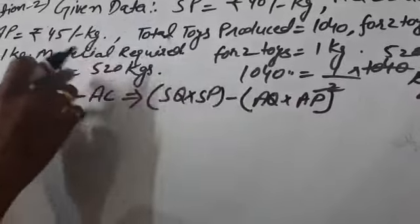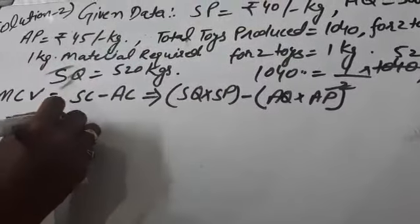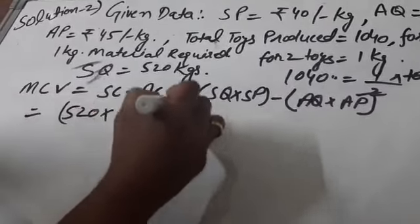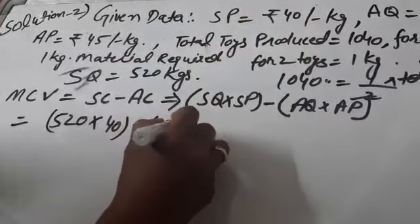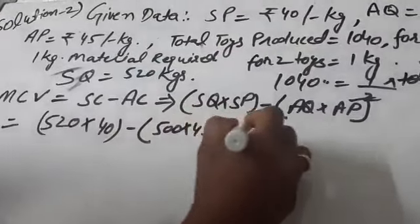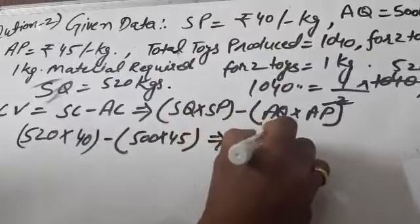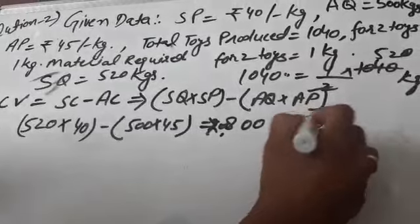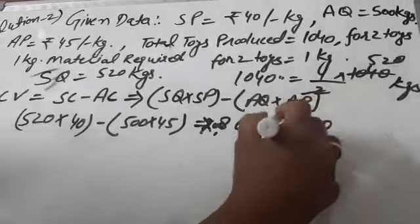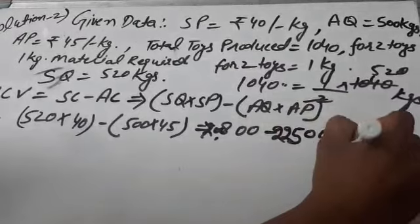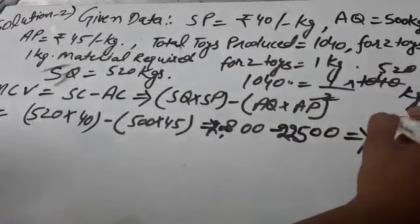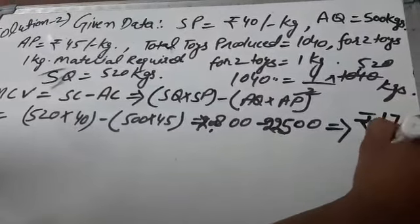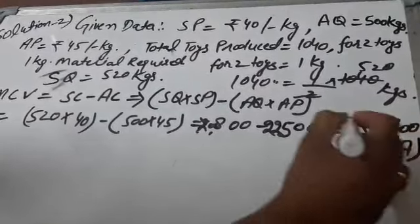Standard quantity is 520, standard price 40, minus actual quantity 500 kilograms multiply 45. Solving this, the value comes to Rs. 1700 in adverse form because it comes in negative form.